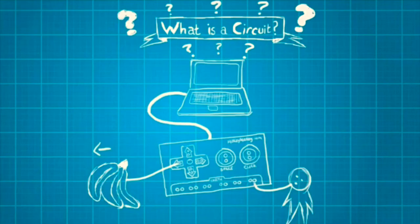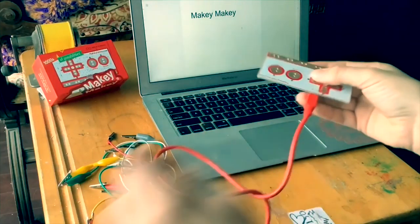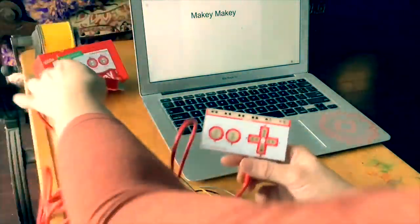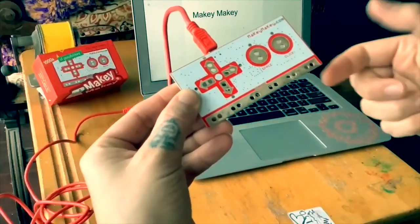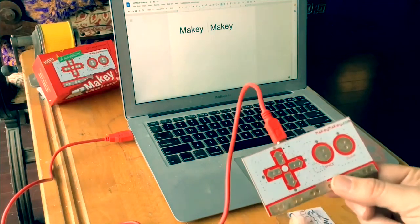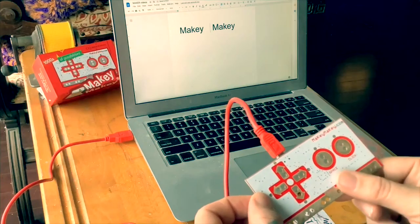Then we can get involved. And if we attach ourselves to the earth connection, and then we go ahead and we touch the bananas, we should complete a circuit. I'm going to plug in my Makey Makey board to a laptop using a USB cable. Then along the bottom of the Makey Makey board, we see the ground. I'm going to keep one finger on the ground and use the other to press the space key. And look on the screen. It's going to make the word Makey Makey move around.